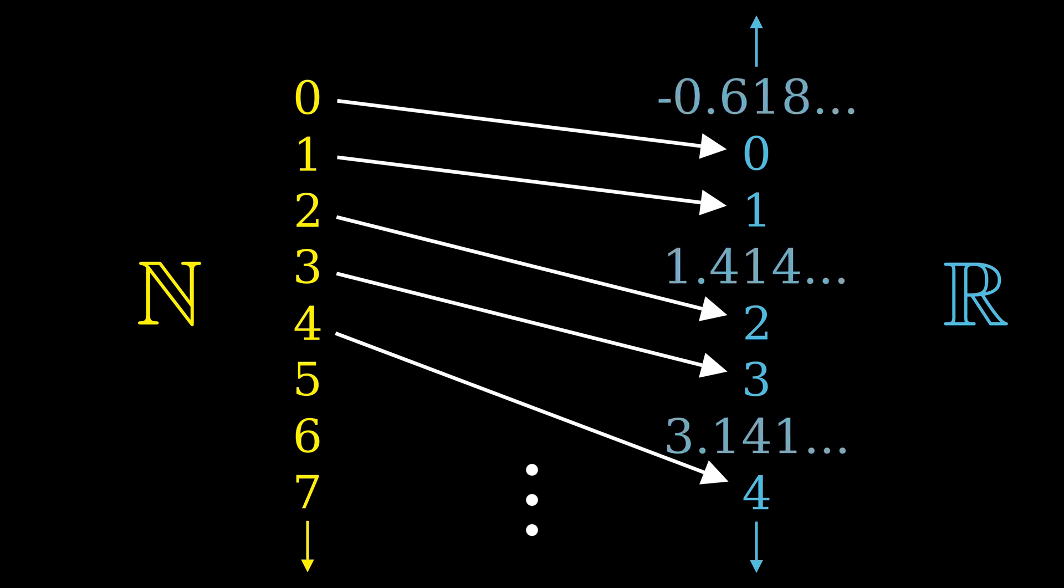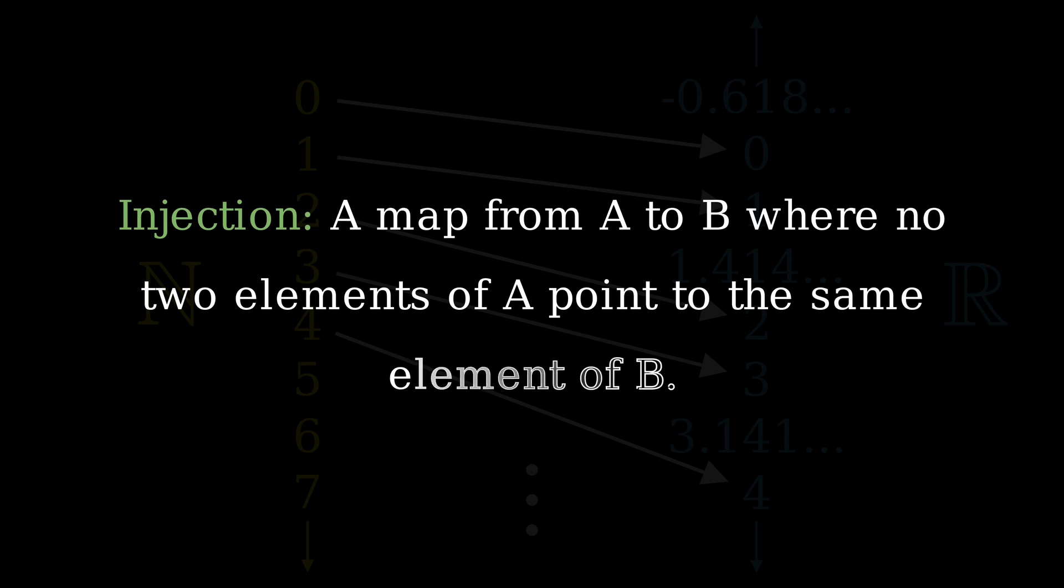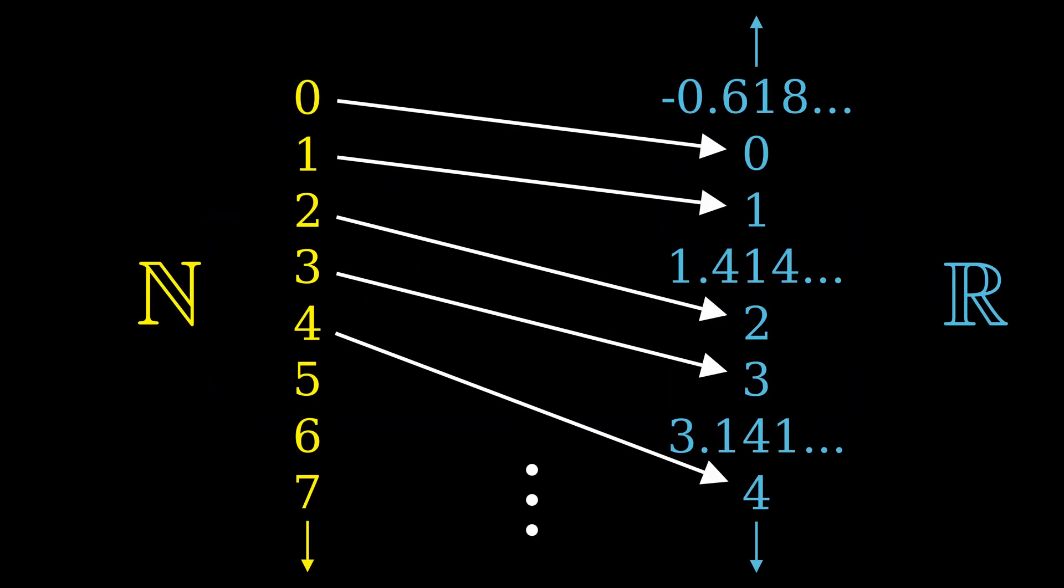It's nowhere near as strong as finding a bijection, but there's another name for this type of function. An injection. Officially, an injection from A to B is one where no two elements of A point to the same element of B. In other words, there could be no arrows going to some point on the right, or there could be one, but never more than that. This is how we'll officially define an infinite set being less than or equal to another in size, if there is an injection between them.